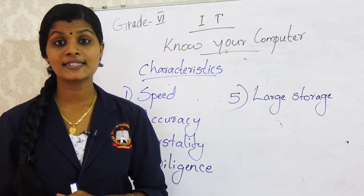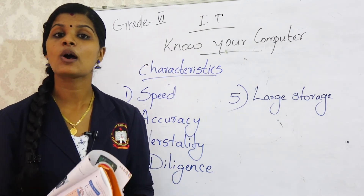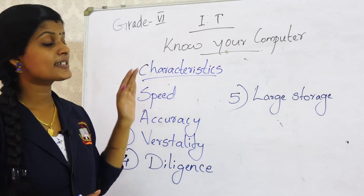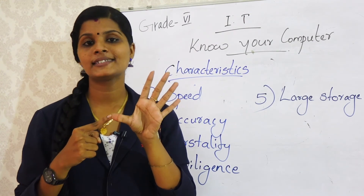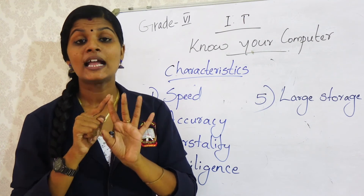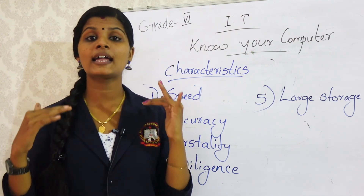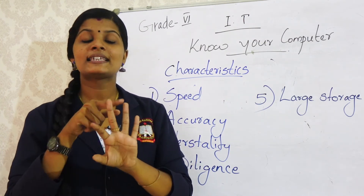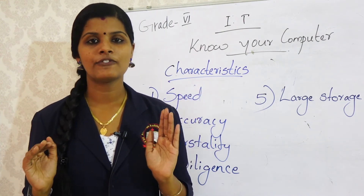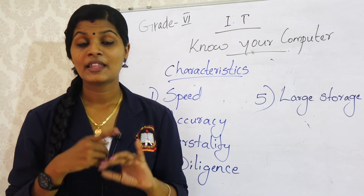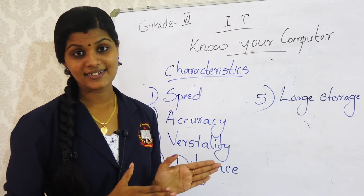These are the five characteristics of computer. In pages 4 and 5 you can see them clearly. The first is speed, the second is accuracy — computer never makes mistakes, the third is versatility — computer does much work in an easy manner, the fourth is diligence — computer never becomes tired or bored, and the fifth is large storage — we can store a large amount of data in computer memory.